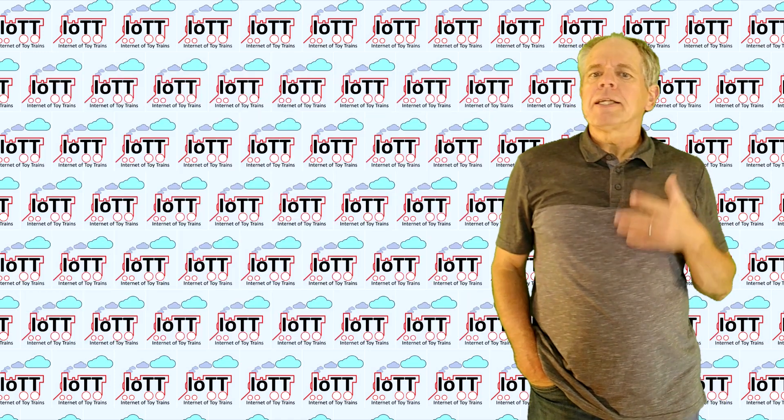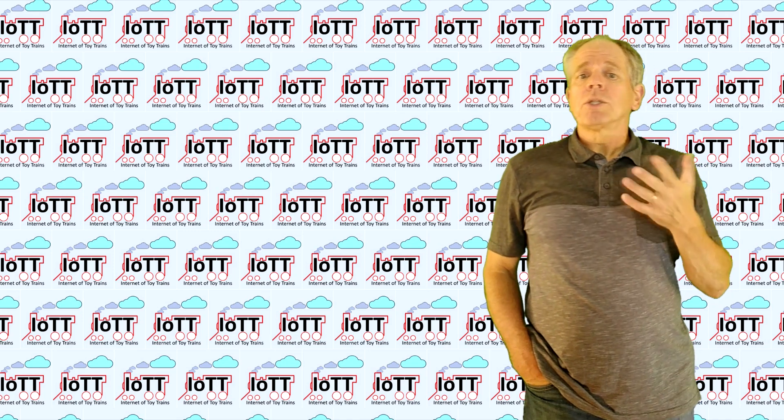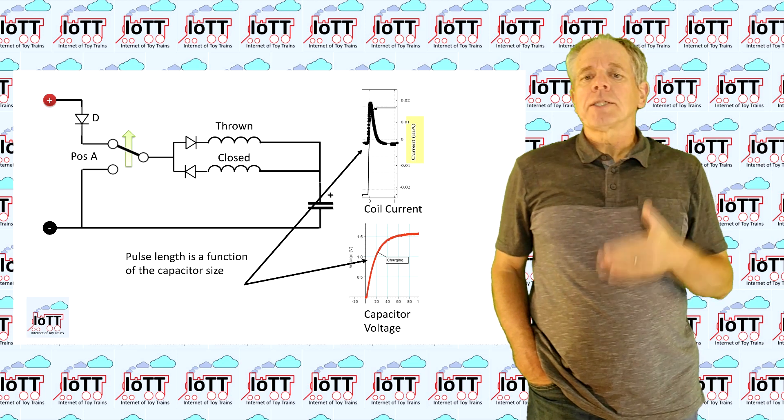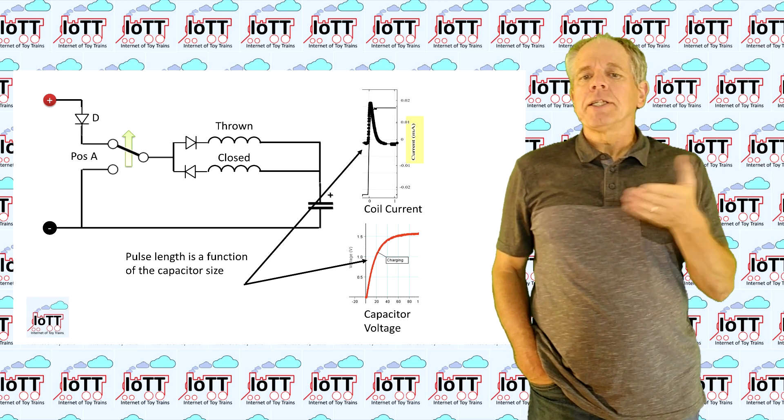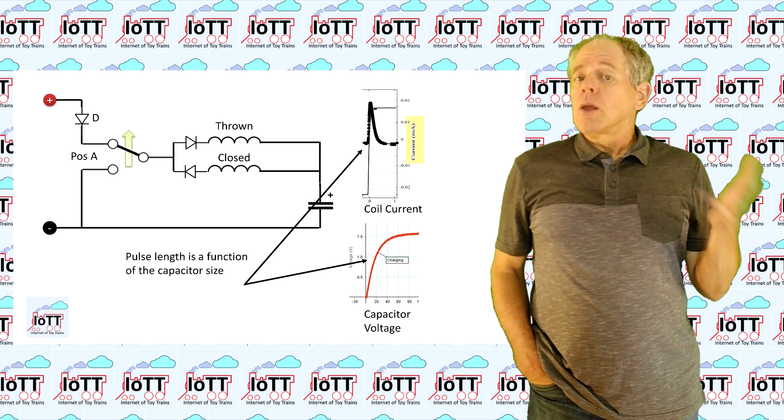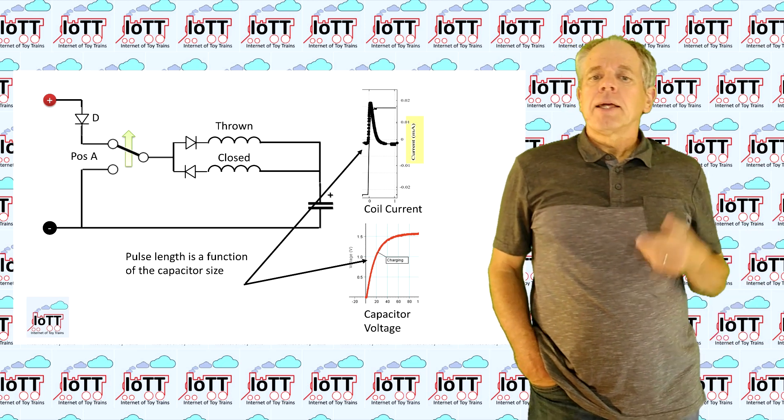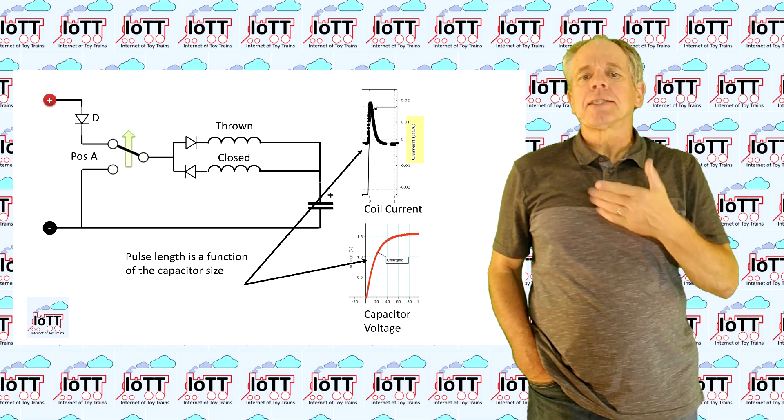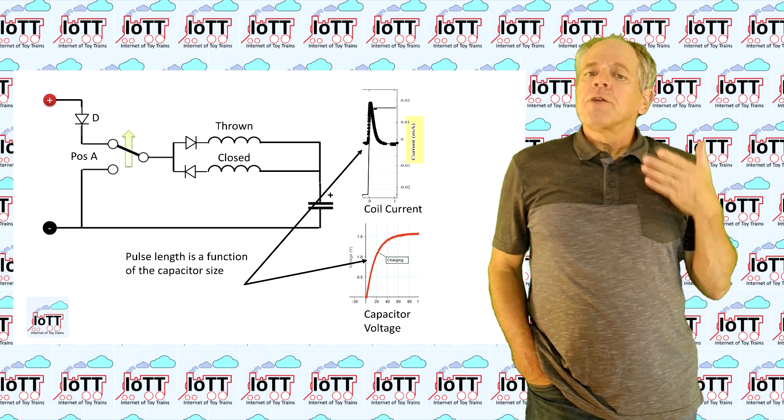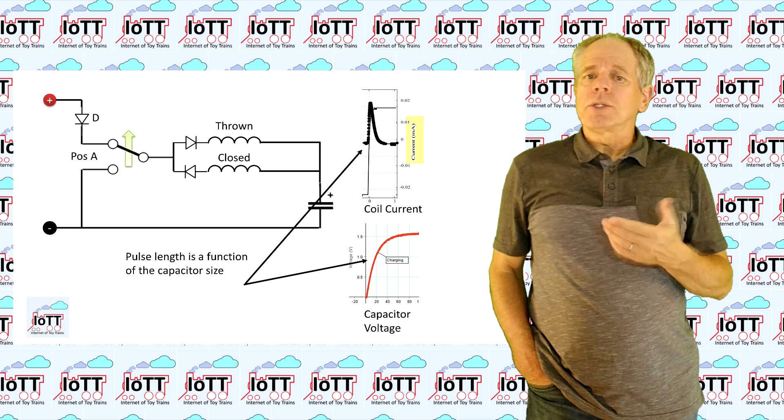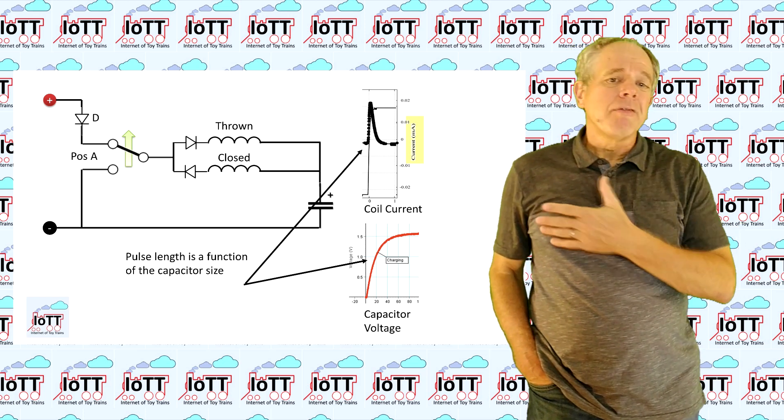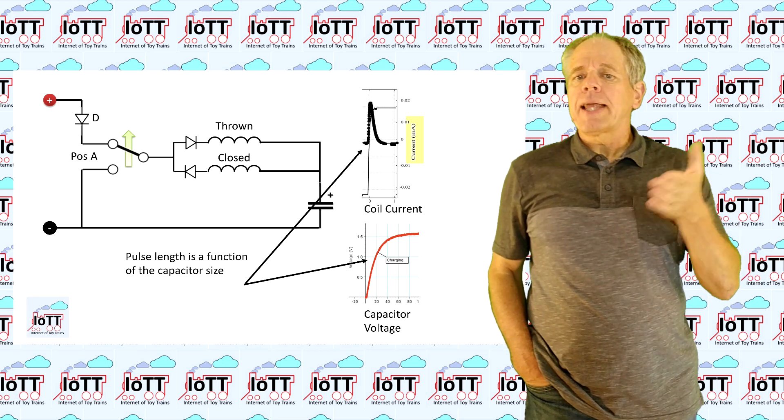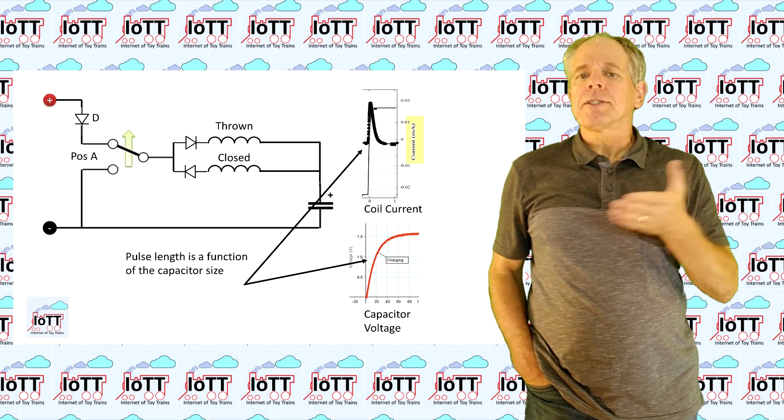Obviously, the circuit is very simple, but it also has some disadvantages. The first is that the length of the current pulse depends on the size of the installed capacitor. Larger capacitor, longer pulse. This is a problem because the user must select the right capacitor size depending on the coil drive. And for motor drives like tortoises, the capacitors would become very large. I was more looking for a solution that could easily be adapted by the user to different drive types.